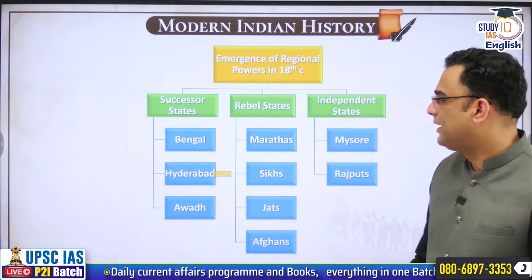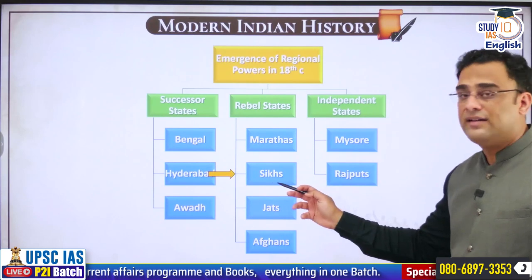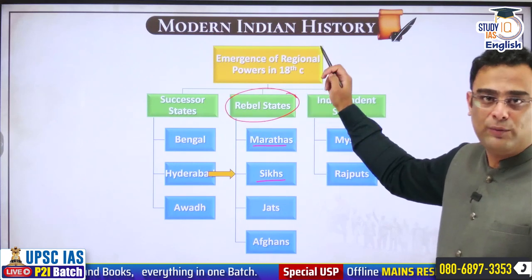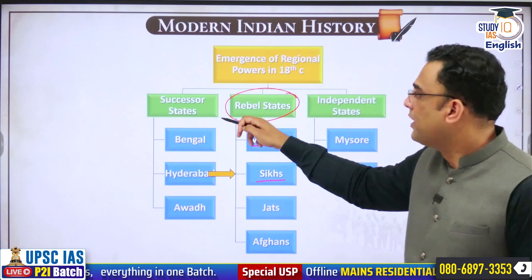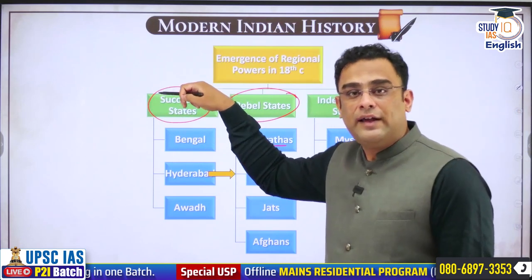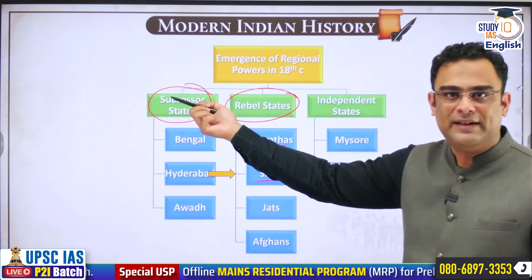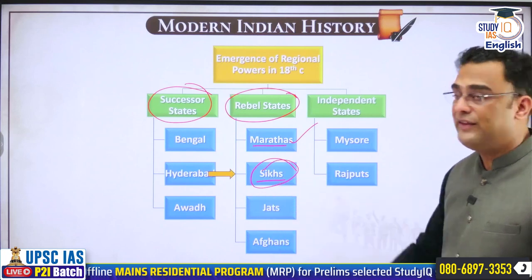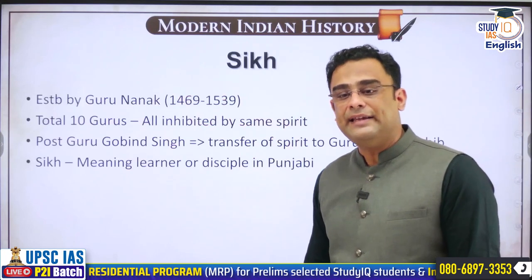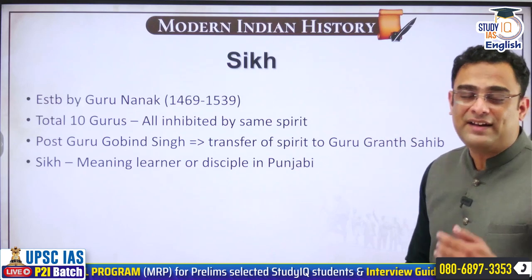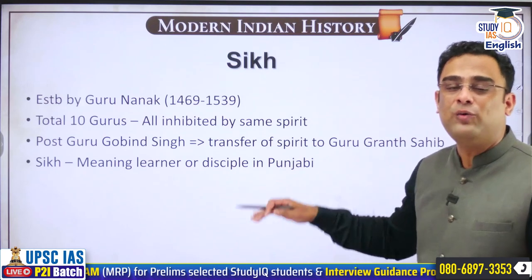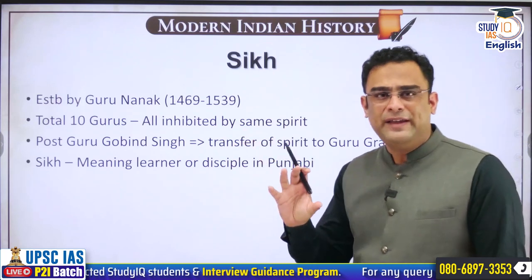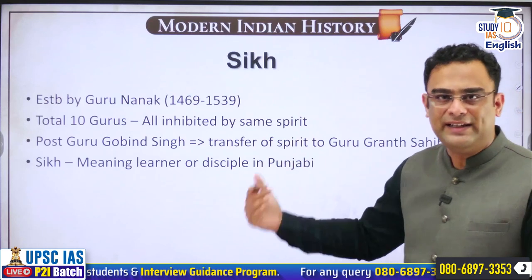Having discussed the rise of Marathas, now let us talk about another rebel state — the Sikhs. Successor states were those where Mughal governors asserted their independence, whereas rebel states fought against the Mughal powers and rose to power. Let us talk about the rise of Sikh power in the 18th century. Before understanding the rise of Sikh power, we have to understand a little background about the Sikhs — just a brief nutshell, since we are focused only on the 18th century.